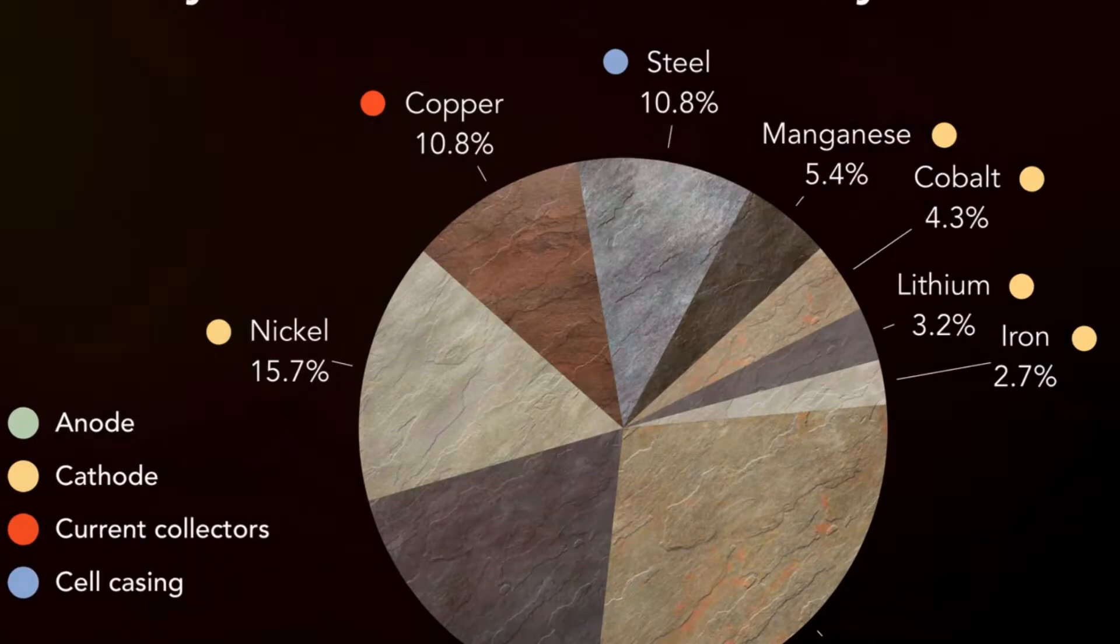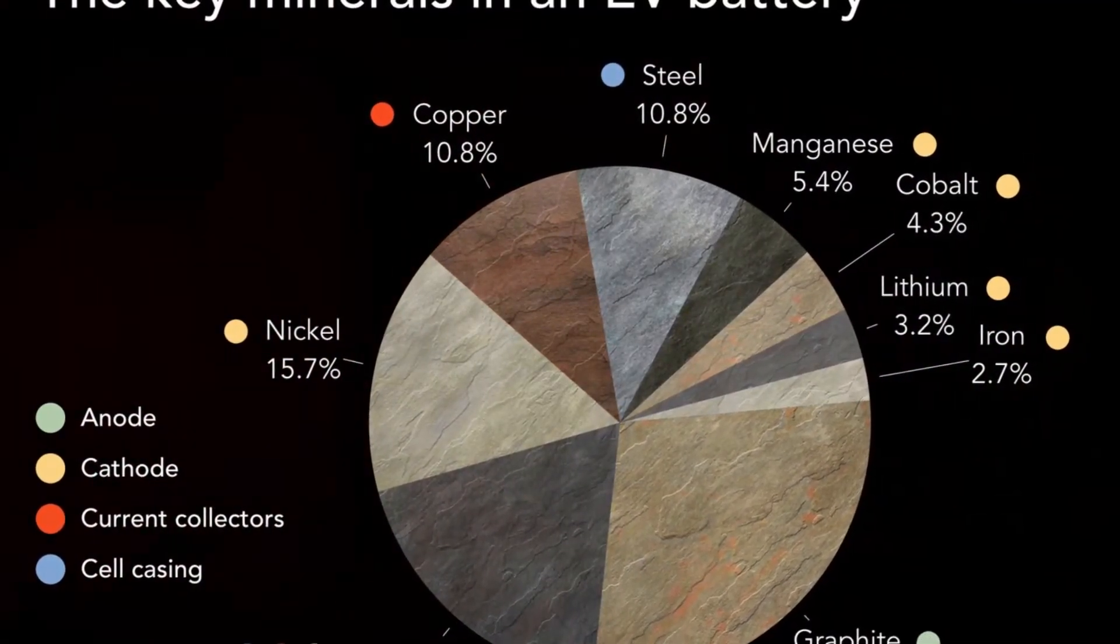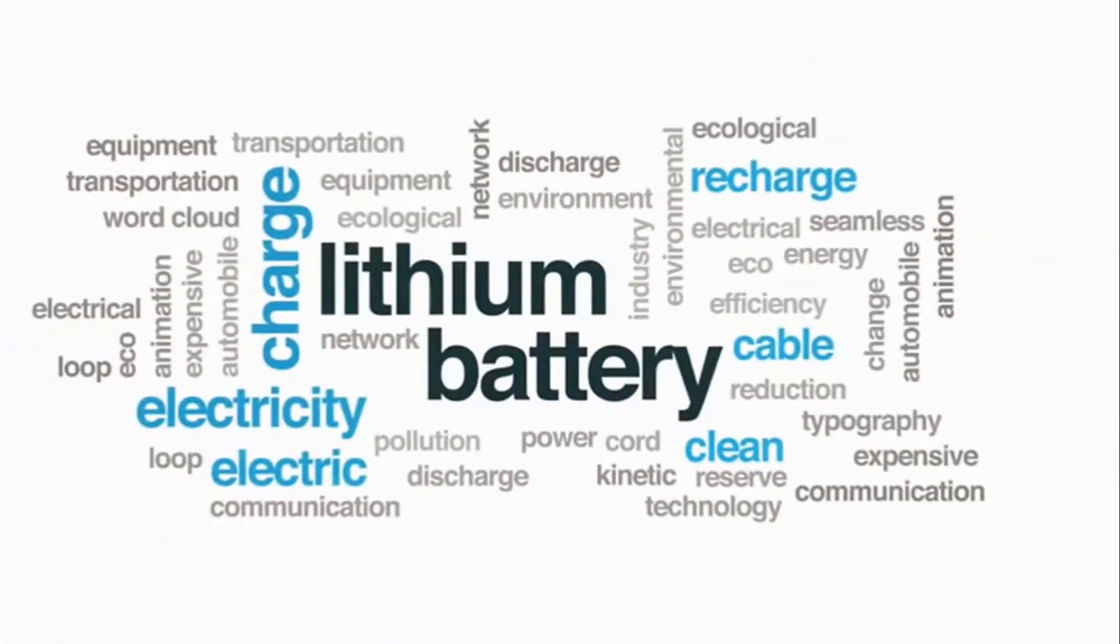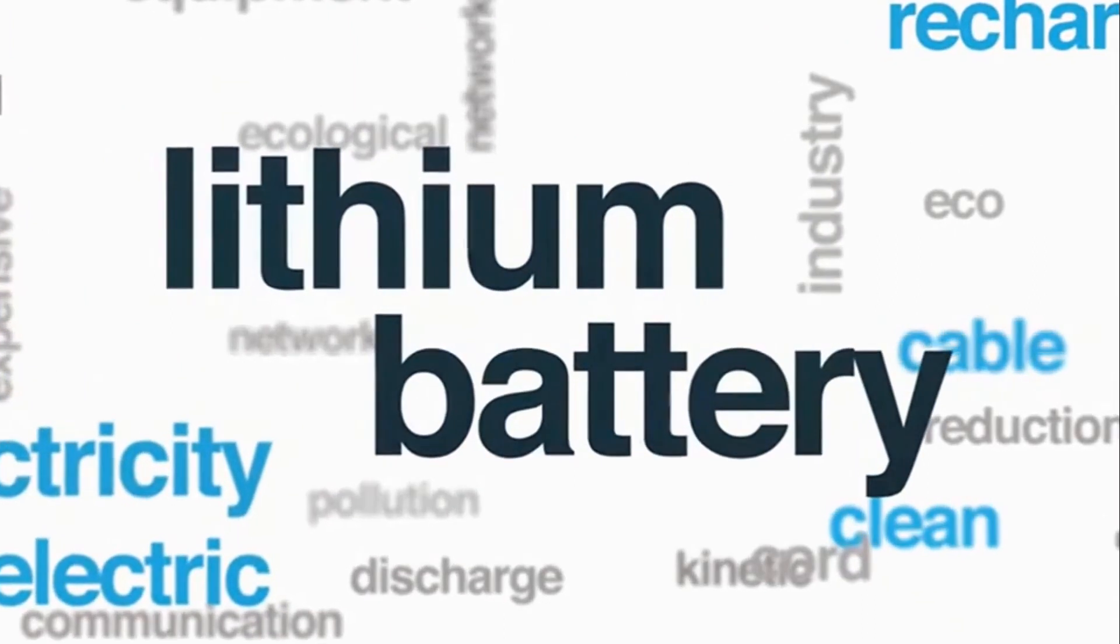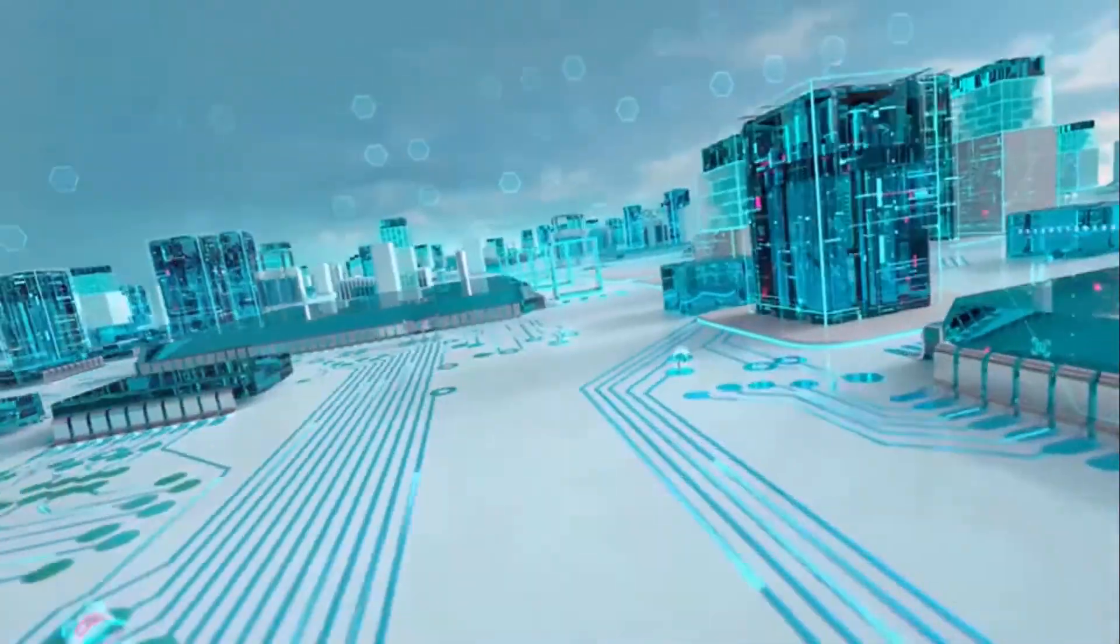Green hydrogen from renewable sources necessitates significant infrastructure investment. Shifting to battery energy storage systems, these depend on minerals like lithium, cobalt, and nickel. Their extraction raises concerns about environmental impact, ethical mining, and supply chain disruptions.